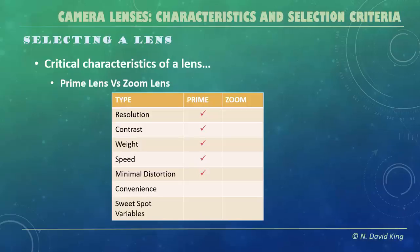But now we come to the big one: convenience. Zoom lenses really come into their own here. Instead of buying a bag full of prime lenses, a good zoom lens covers not only those prime settings but everything in between, and that can be really, really handy.